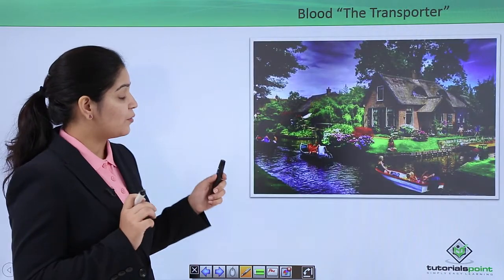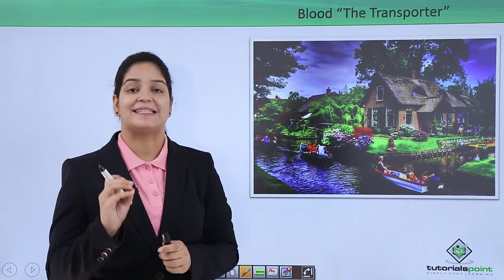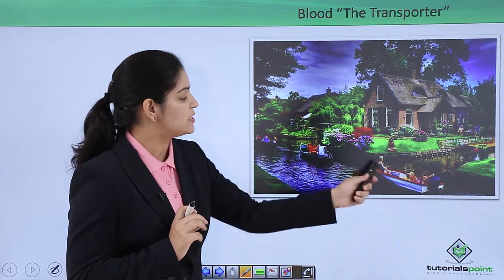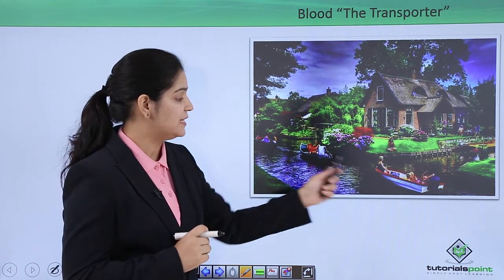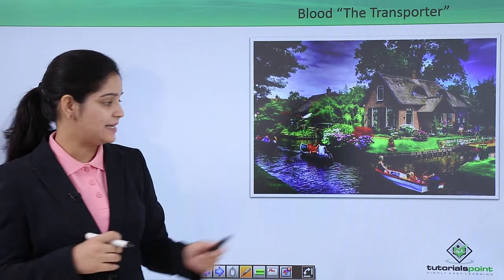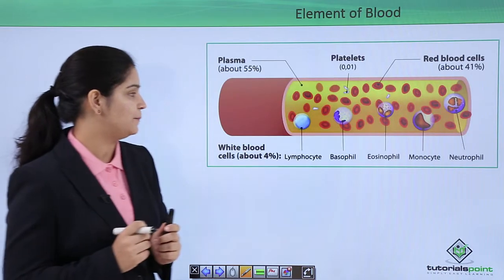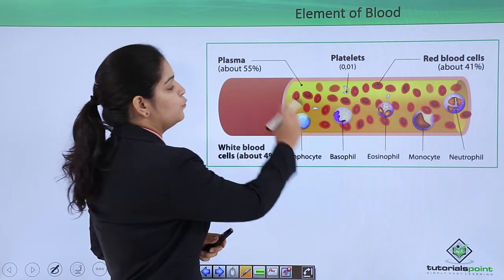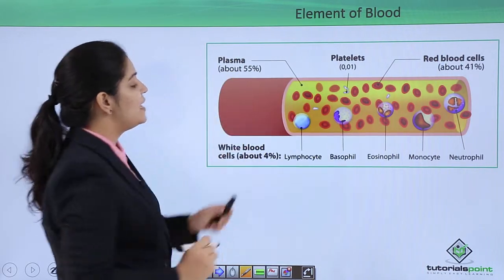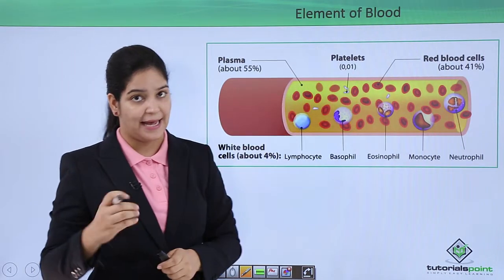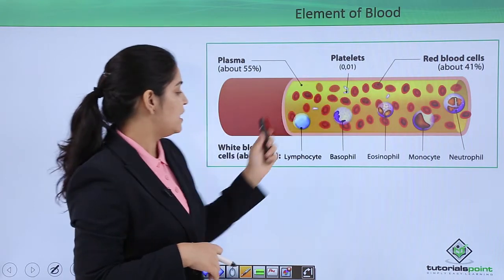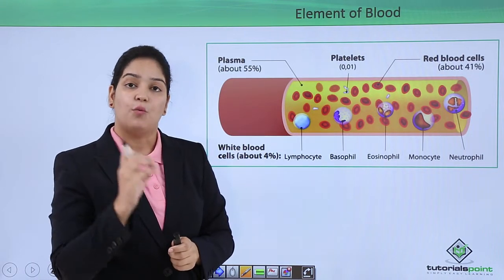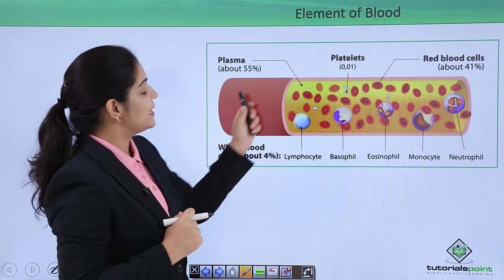Blood is the main transporter system connecting all the organs of our body, and the function of our body would fail without this transporter. Now consider this scenery as a blood system — this river as blood, and these boats inside as the blood cells. These boats are carrying different substances inside the blood. Inside our blood vessel there is a fluid matrix called plasma, and in this plasma there are different formed elements.